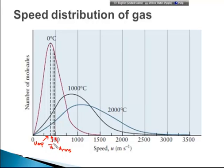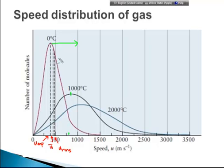These three speeds are vital representations of the overall speed at which the gas molecules are moving. At higher temperature, the curve shifts to the right — it shifts to higher speed. We mentioned earlier that at higher temperature gas molecules move faster. And the curve begins to become broader, so that more and more molecules have higher speeds.